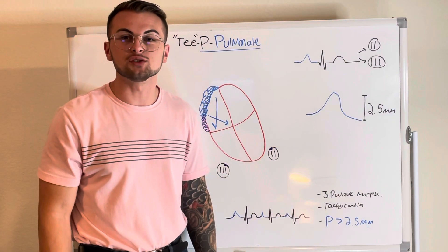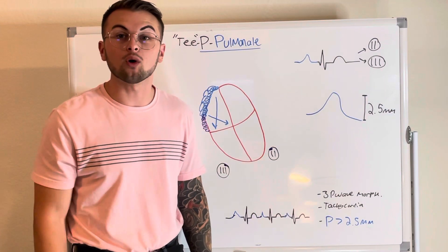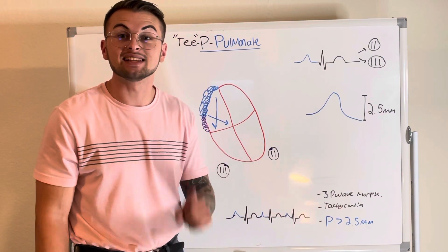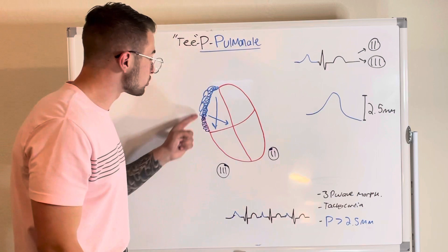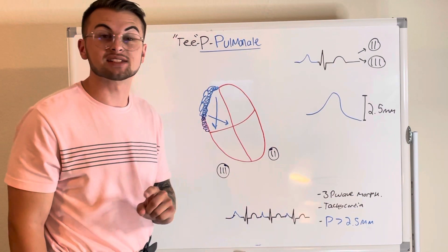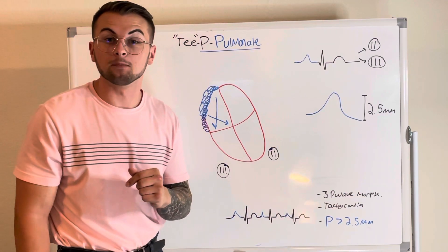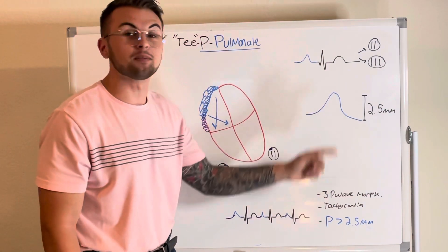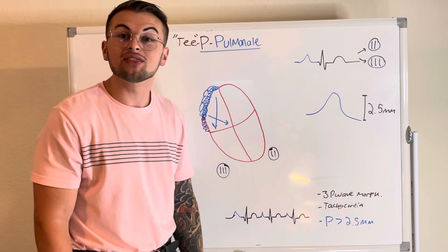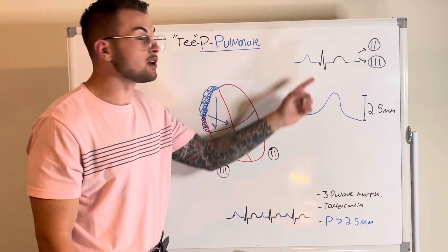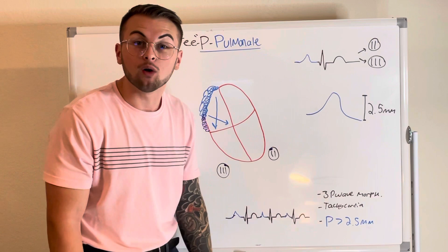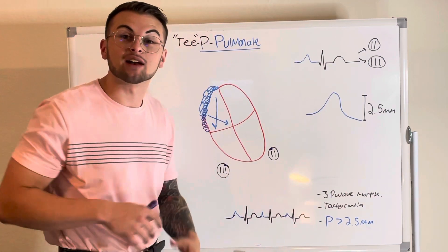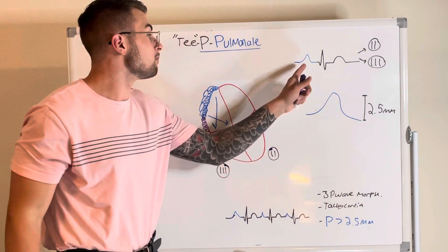Hello everyone, and welcome back to Clinical Cousins' YouTube channel, where today we're going to go over P Pulmonale, which is an EKG finding indicative of right atrial enlargement. Remember this as 'tP Pulmonale' because the P waves in this EKG are sharp or peaked like a 'T'. Also think: P as in P wave, and Pulmonale meaning pulmonary circulation, or the right side of the heart.